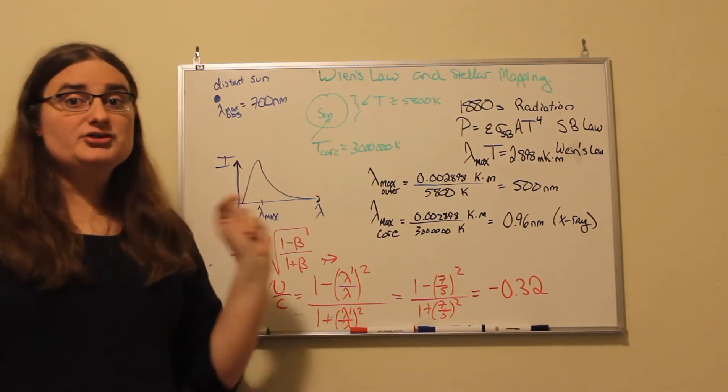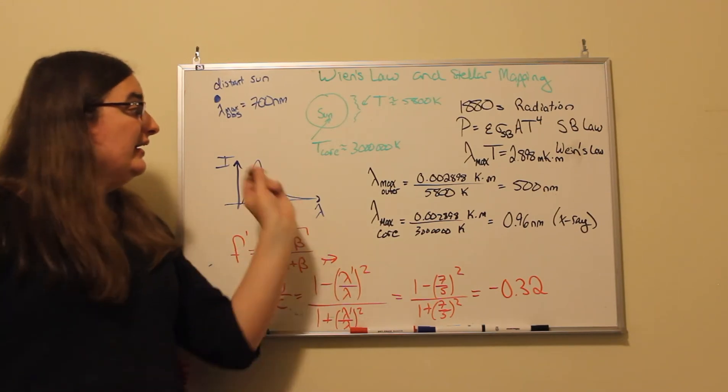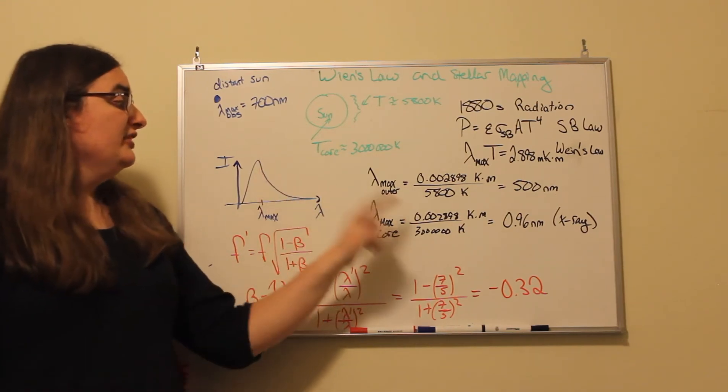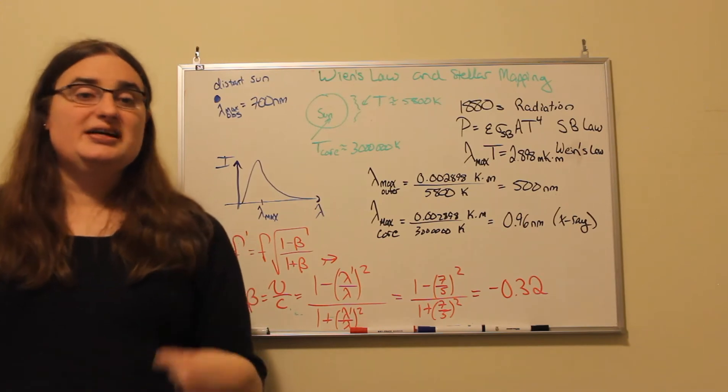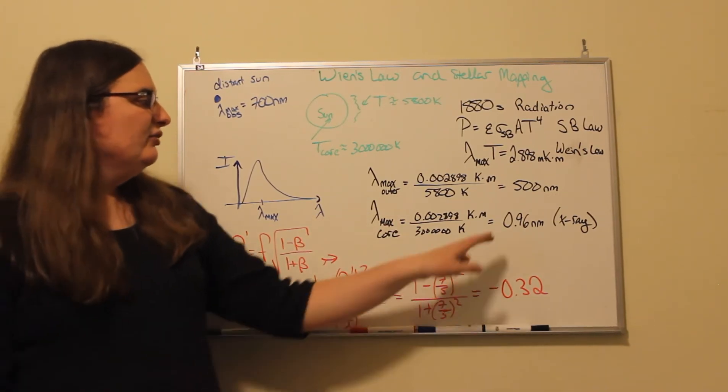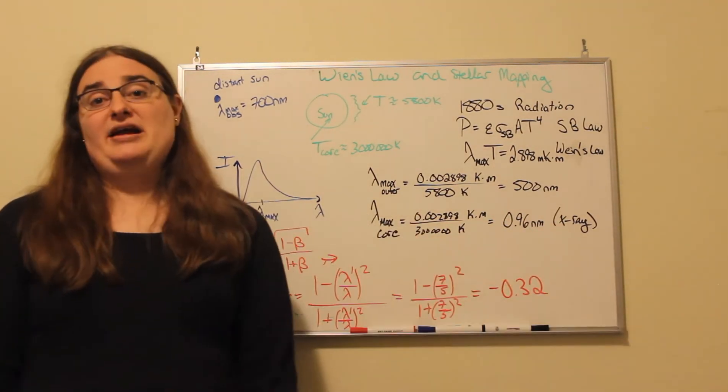Now interior to the core of our sun, we have a fusion process going on. And towards the core, the temperature is around 3 million kelvin. So if I take Wien's constant, 0.002898 kelvin times meters, divide by 3 million kelvin, I get a value of 0.096 nanometers, which happens to be in the x-ray range.